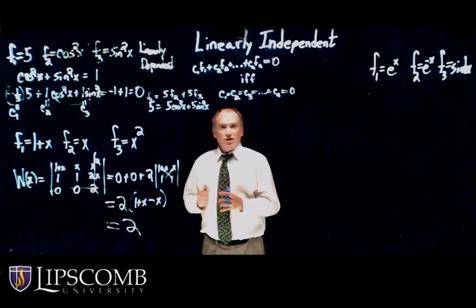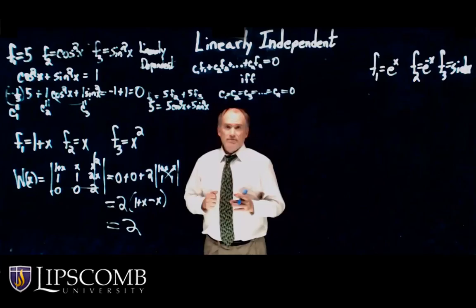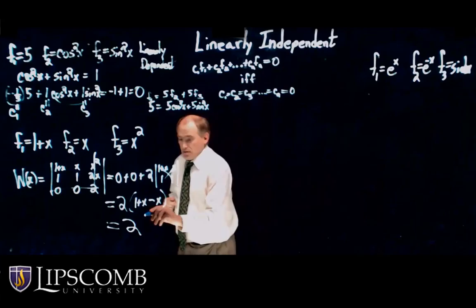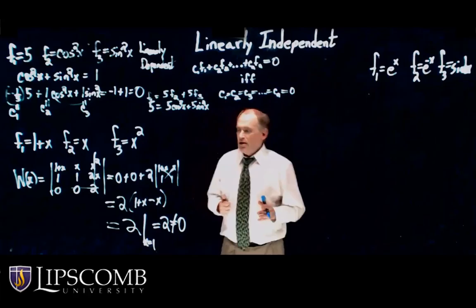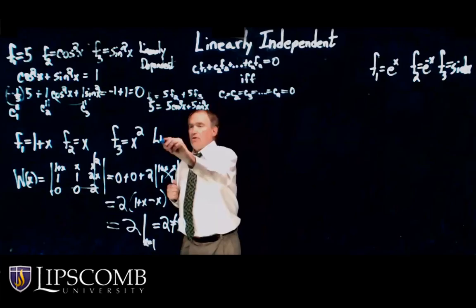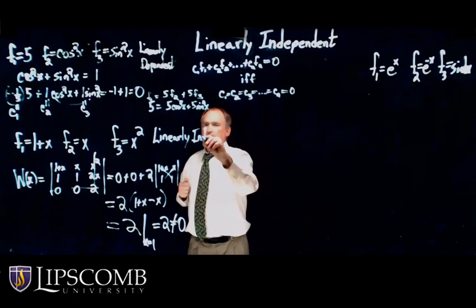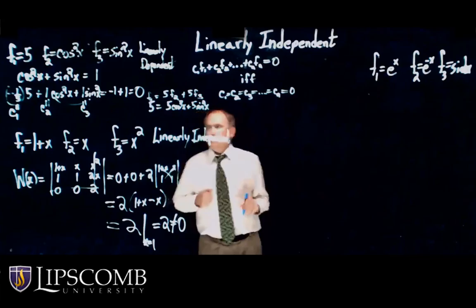Now, if you can pick an x such that the Wronskian is not 0, then they're linearly independent. So I notice in this one, I don't even have to pick an x, but remember to pick an x. I'm just going to pick x equal to 1. So that's 2, that does not equal 0. It's a constant function, so regardless of what x I pick, it's not going to be 0. So for these, these are linearly independent.